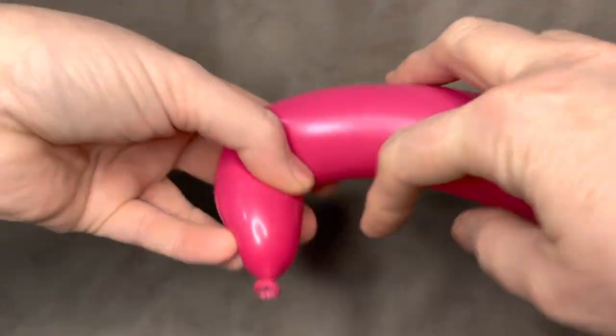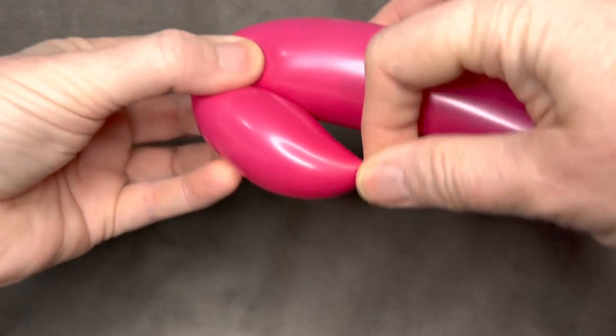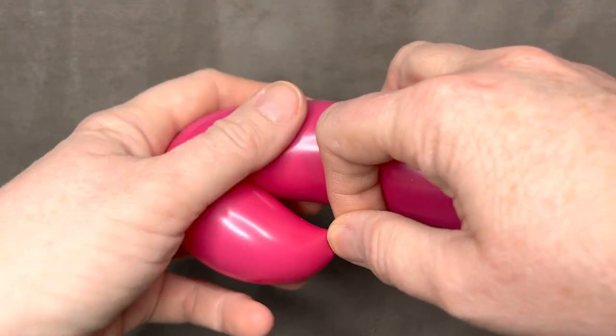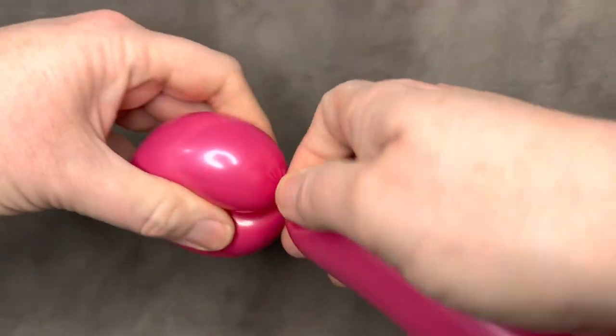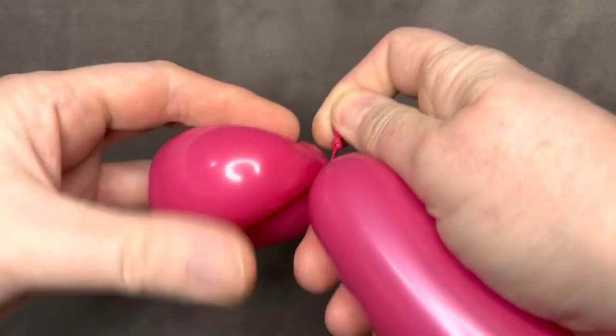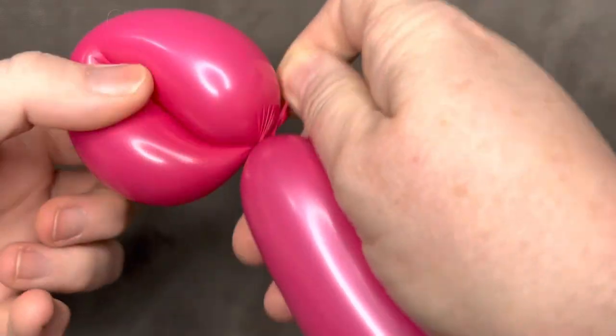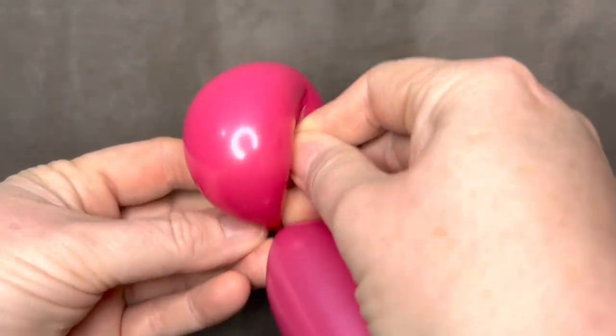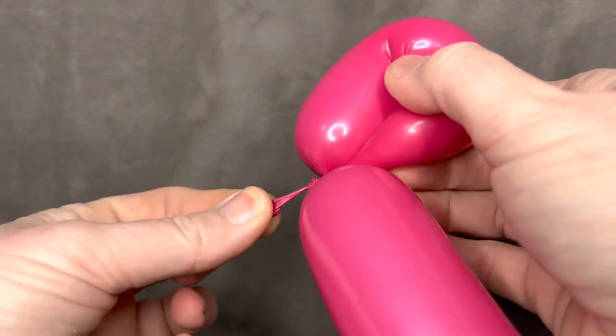Once again, we're going to do a very small pinch or petal twist. Now you're going to twist this, and remember to keep this little nozzle knot on the opposite side so it's really nice and tight. Take it and put it through.